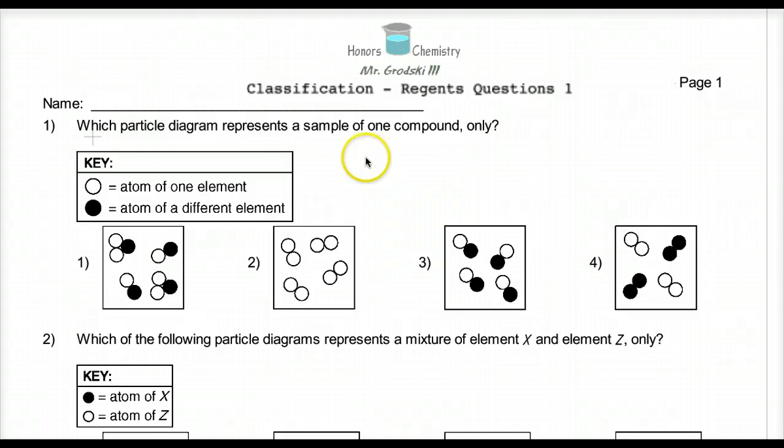We have a question that says, which particle diagram represents a sample of one compound only? And as you can see, this is a classic way that they like to ask questions in regards to classification using pictures, and we've done that in several different levels already. They're asking for a compound. We know it's made up of the same type of molecule, and a molecule is two or more different atoms chemically combined.